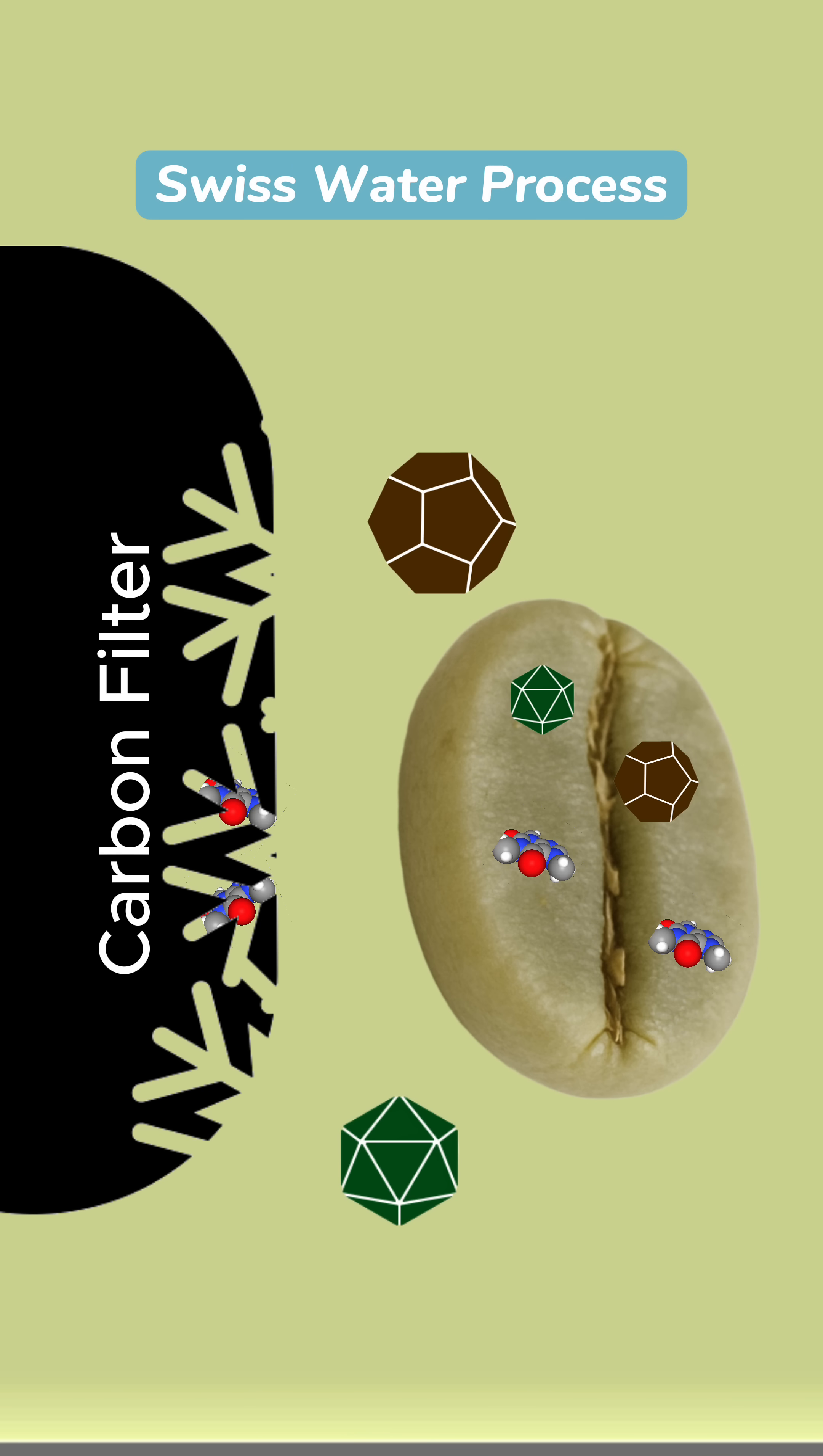A new batch of green coffee enters this caffeine-free extract. Osmosis pulls out the compounds in the bean that are not present in the extract. Roughly speaking, caffeine is what's missing, and most of the other compounds stay in the bean. The carbon filters continue to remove caffeine from the extract to keep the osmosis going.